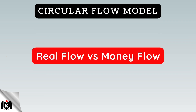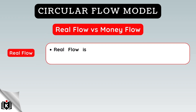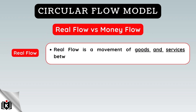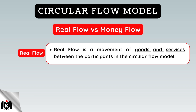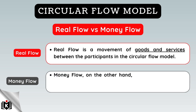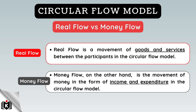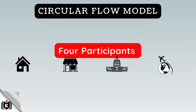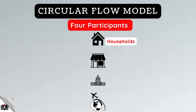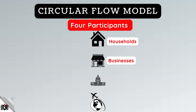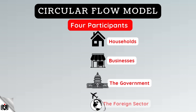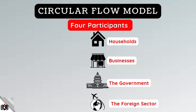There are also two forms of flows in a circular flow model: the real flow and the money flow. The real flow is the movement of goods and services between the participants in the circular flow model. The money flow, on the other hand, is the movement of money in the form of income and expenditure. There are four possible participants in the circular flow model: private households or private consumers, the business sector, the government or the state, and the foreign sector.